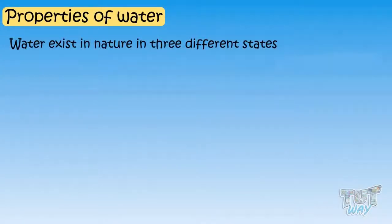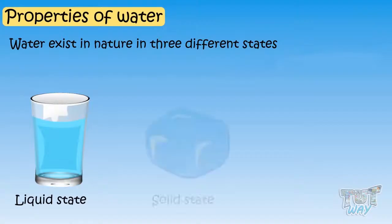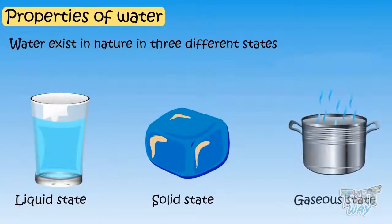Water exists in nature in three different states: liquid form, solid form, and gaseous form. Now let's learn it one by one.